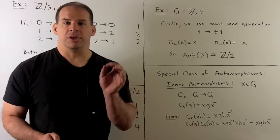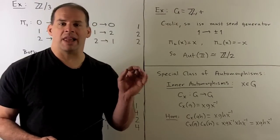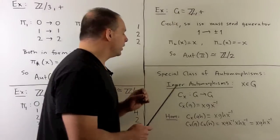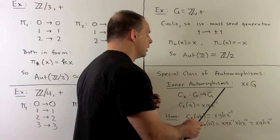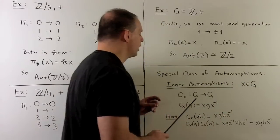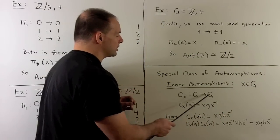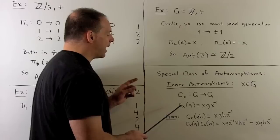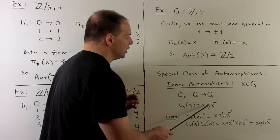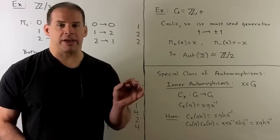Shifting gears, let's consider a special class of automorphisms called inner automorphisms. If we fix some x in our group, we define c_x going from G to itself by c_x(g) = xgx⁻¹. So we're conjugating by x.